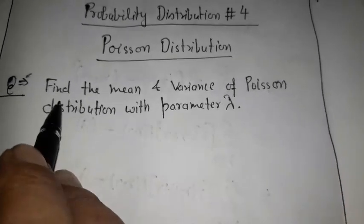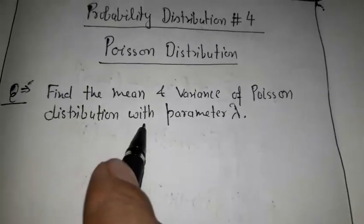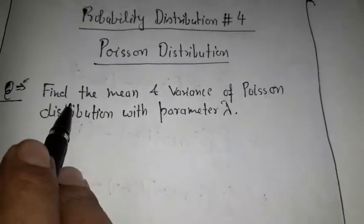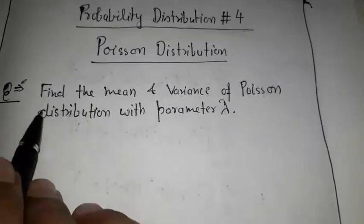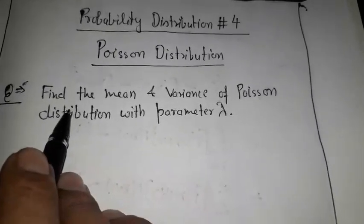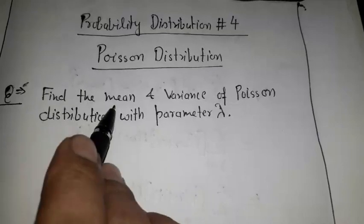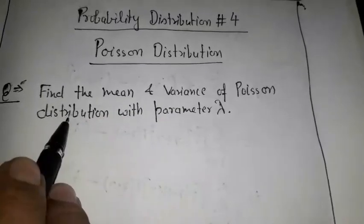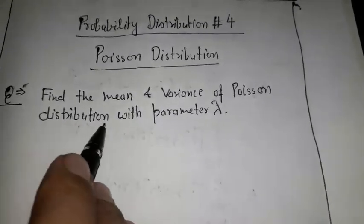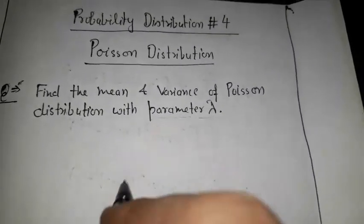The first problem is: find the mean and variance of the Poisson distribution with the parameter lambda. For the Poisson distribution, we need to find the mean and variance. The mean and variance of the Poisson distribution are considered with the parameter lambda.